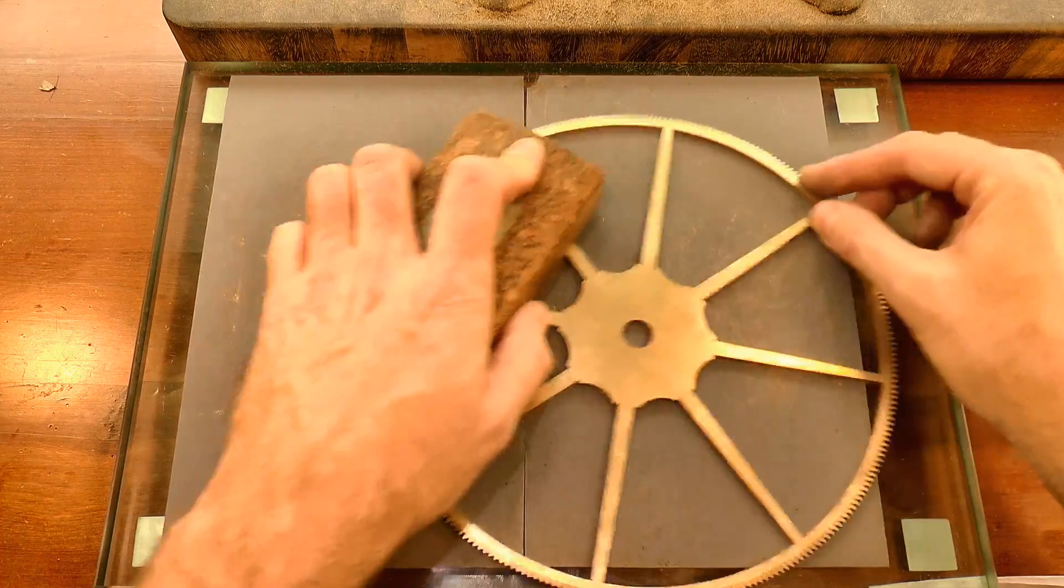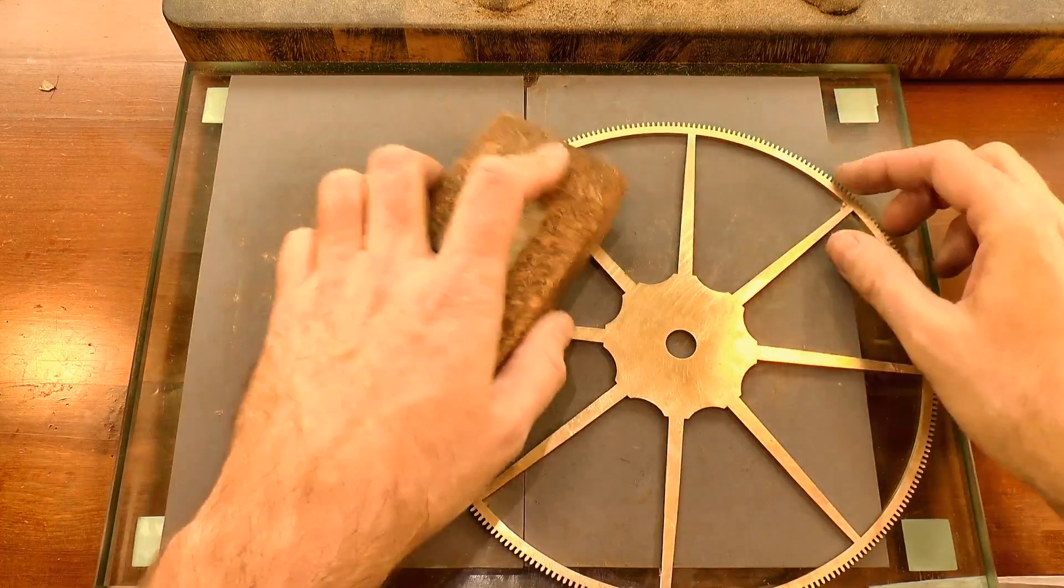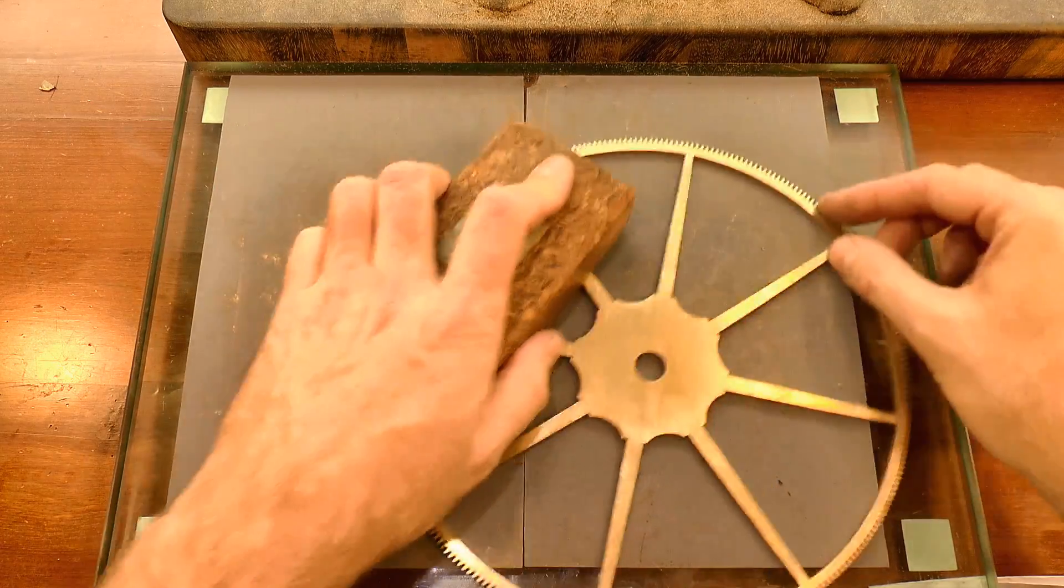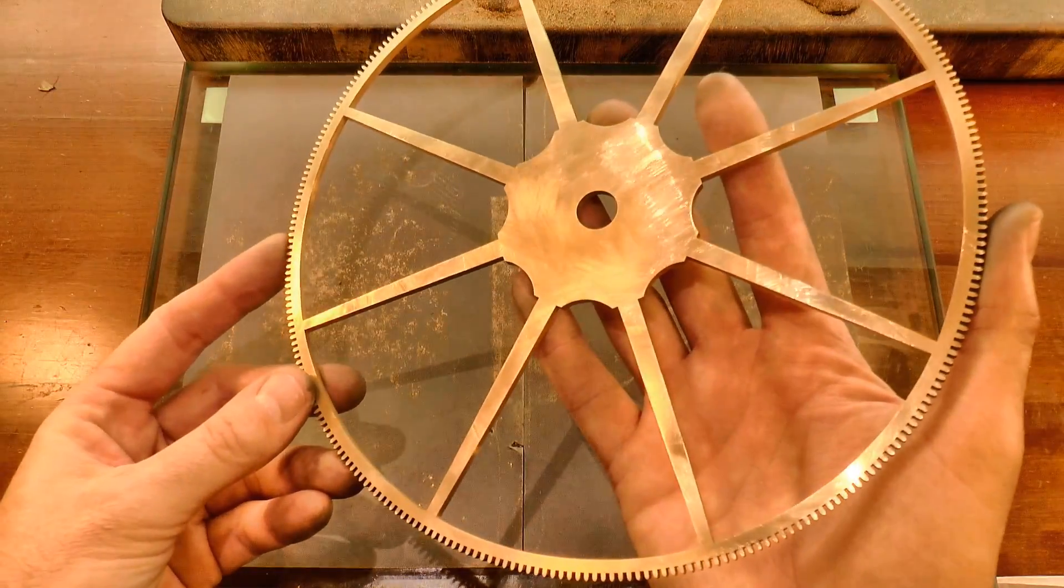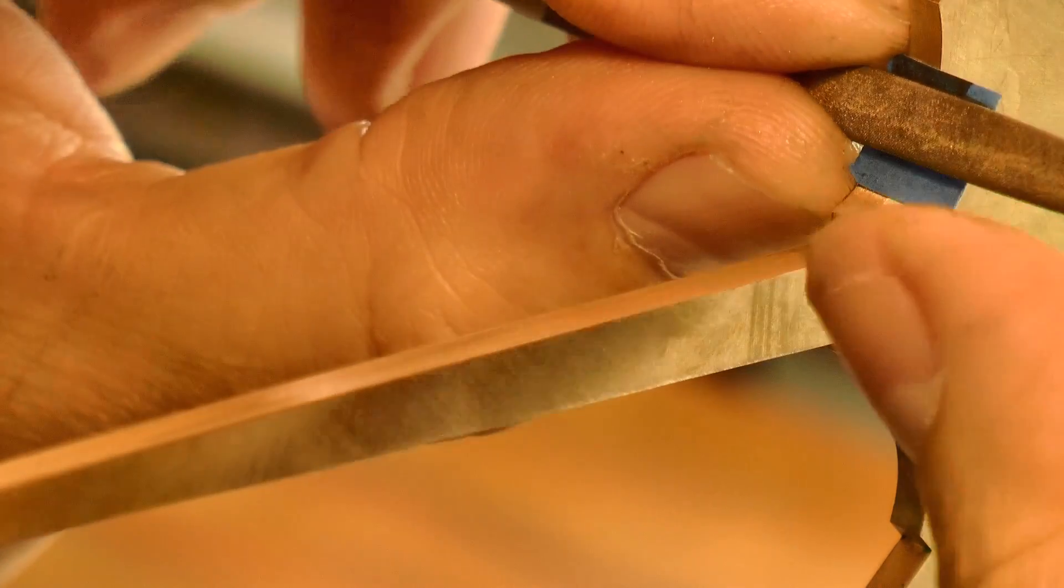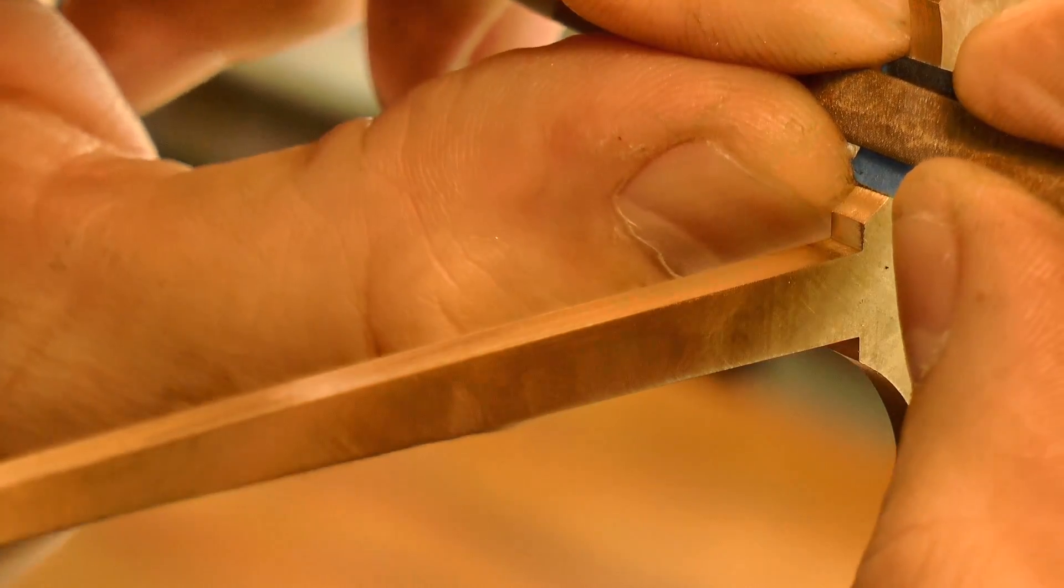A quick rub on crocus paper deals with the small burr raised by the filing. And now we're basically on the home stretch—the wheel is ready to have the inside edges papered and then burnished. The little strips of sandpaper I'm using here are held around a file that best suits the shape that I'm working on.